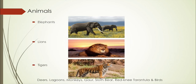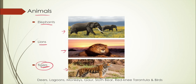This is an important characteristic distinguishing them from evergreen forests, which never shed their leaves. Tropical deciduous forests shed leaves almost every year. Animals found here include Asiatic and African elephants, Asiatic and African lions, various species of tigers — including those found in India, which has the tiger as its national animal — plus deer, monkeys, gaur, sloth bears, red-knee tarantulas, and various birds.